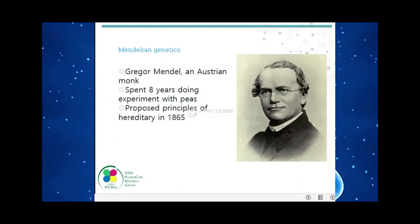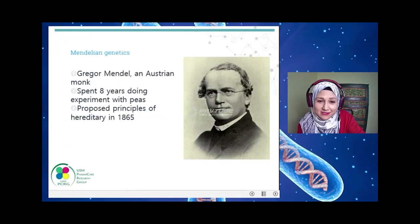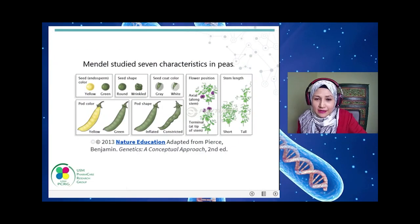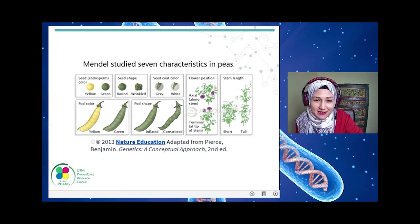This is Gregor Mendel. You might have heard of him — he is an Austrian monk who spent eight years doing experiments with peas. He wanted to study genetics and heritability, and he proposed a principle of heredity in 1865. He is quite famous for Mendelian Law.